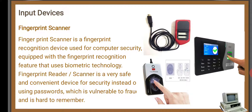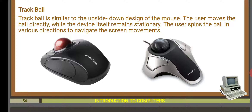The next one is the trackball. In a mouse, we use the trackball inside, but in a trackball device, the ball is on top. To move the screen, we roll the trackball. The trackball is similar to an upside-down design of the mouse — the user moves the ball directly while the device itself remains stationary. By spinning the ball in various directions, we can navigate the screen.